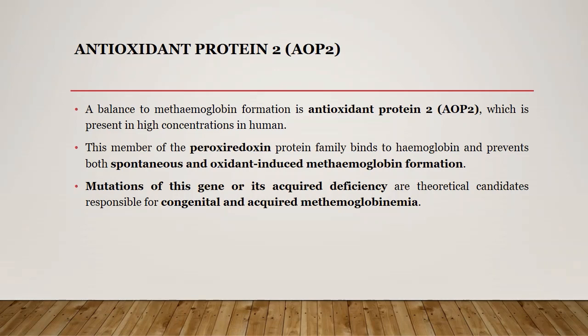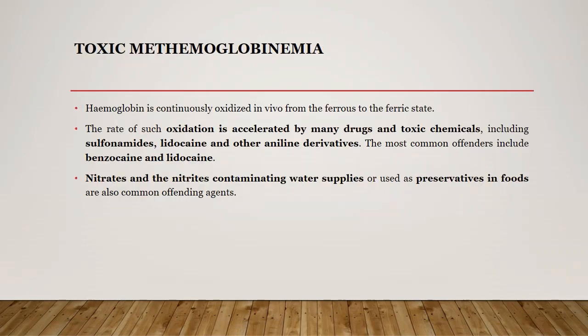Another sub-protein we should talk about is antioxidant protein 2, a member of the peroxiredoxin protein family which binds with hemoglobin and prevents both spontaneous and oxidant-induced methemoglobin formation. Mutations in the genes which encode this protein give rise to congenital and acquired methemoglobinemia. We also have toxic methemoglobinemia, where certain drugs and toxic chemicals accelerate the oxidation of hemoglobin from the ferrous to the ferric state. The drugs include sulfonamides, lidocaine, and other aniline derivatives. The most common offenders include benzocaine and lidocaine. Nitrates and nitrites can also contaminate water supplies or be used as preservatives in food.